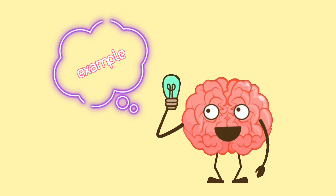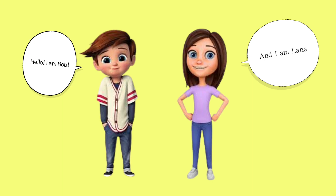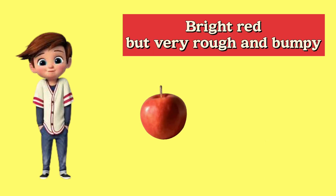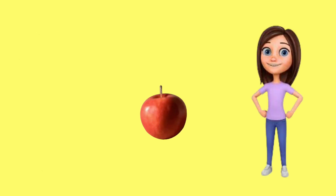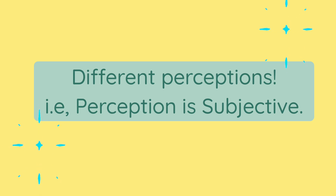To understand the process better, let's look at an example. Meet my friends Bob and Lena. I gave both of them an apple and asked them to describe it. Bob said the apple was bright red and its texture was super rough, with lots of bumps and grooves. Whereas Lena said the apple was a dull brown color, but pretty smooth. This difference in the way Bob and Lena experienced the same apple is due to perception.